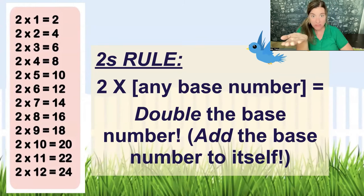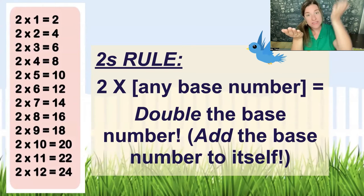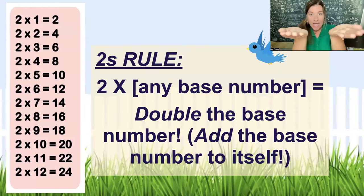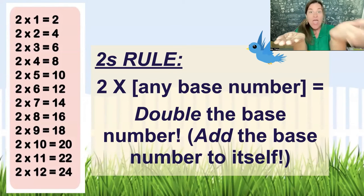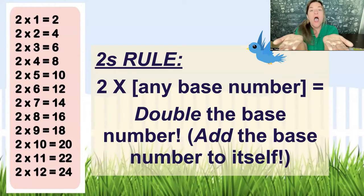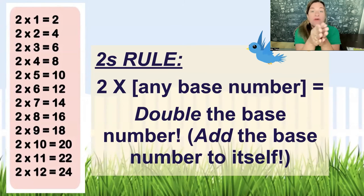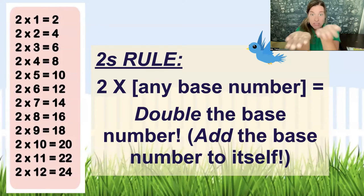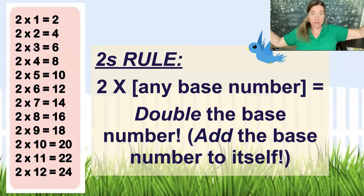If I have five Skittles and I want to double them, I take five more Skittles — now I have five plus five equals ten. Five times two equals ten. That's multiplying times two. Now let's look at some examples, and I'm going to show you some mental math strategies you'll learn throughout this course.